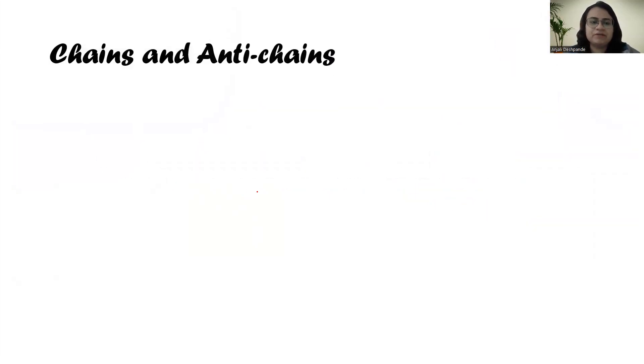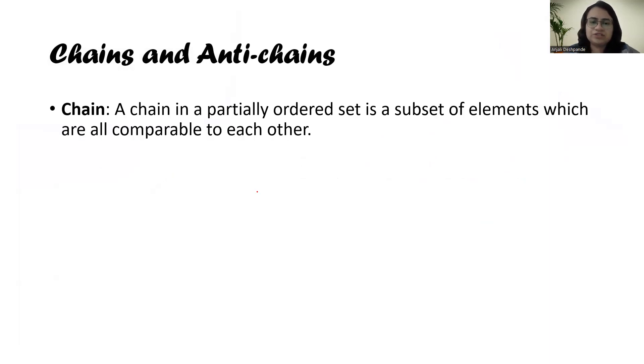So let me first define chains and anti-chains. A chain in a partially ordered set is a subset of elements which are all comparable to each other. Comparable in the sense, all these elements in the subset will satisfy the property of the relation in the whole set.